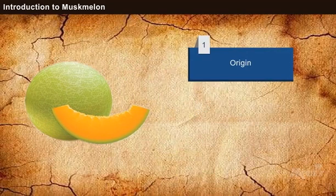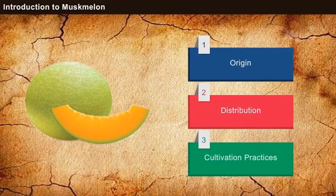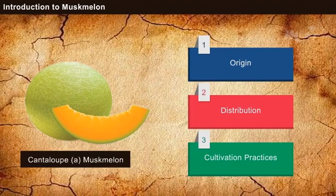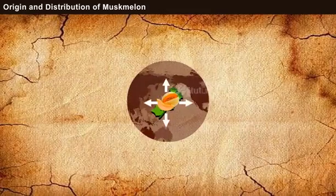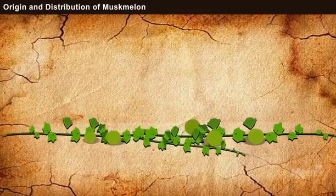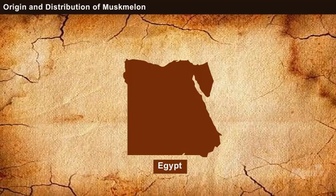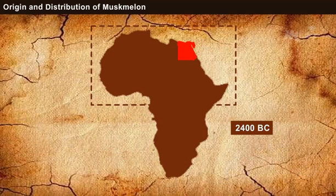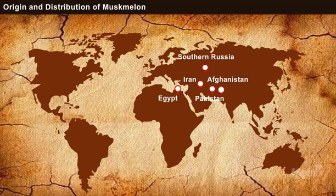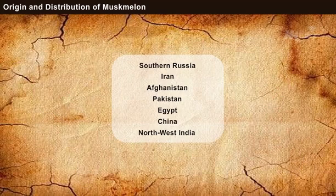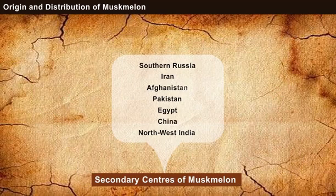In this lesson, we shall discuss the origin, distribution and cultivation practices of cantaloupe, alias muskmelon. It has been believed that muskmelon was first grown in Egypt, a North African country, during 2400 BC. From Egypt, it spread to other countries such as Southern Russia, Iran, Afghanistan, Pakistan, North West India and China. These countries were said to be the secondary centers of muskmelon.